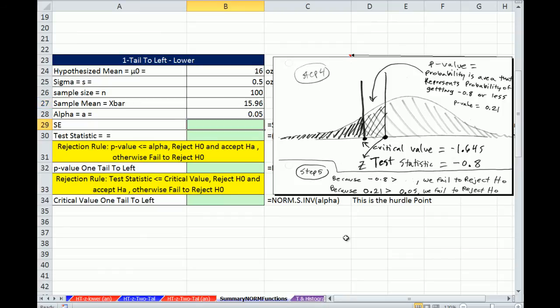We have to calculate our standard error. We're going to take our sigma divided by the square root of our n. Then we calculate our test statistic. We need our sampling error in the numerator divided by the standard deviation minus 0.8.